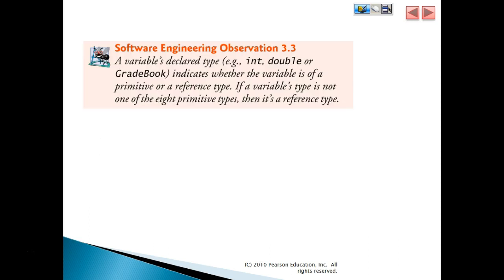A variable declared type int, double, or GradeBook indicates whether the variable is of primitive or reference type. If a variable's type is not one of the eight primitive types, then it is a reference type.